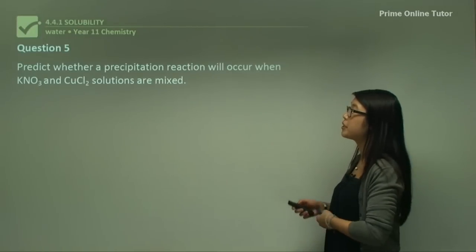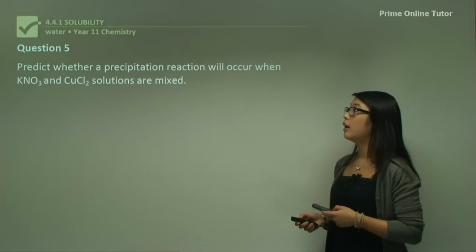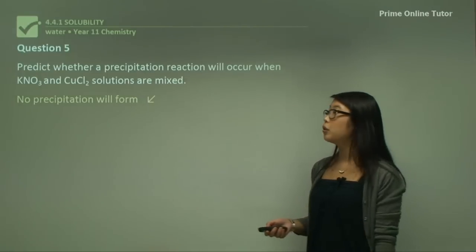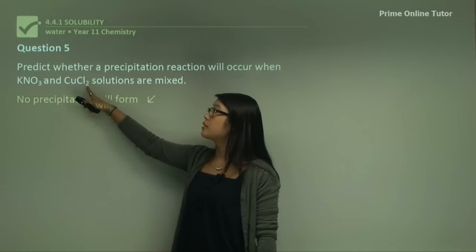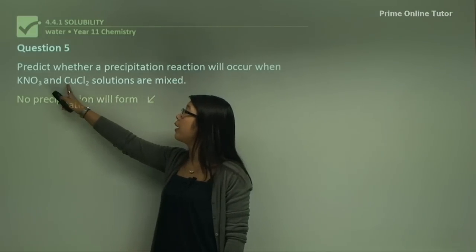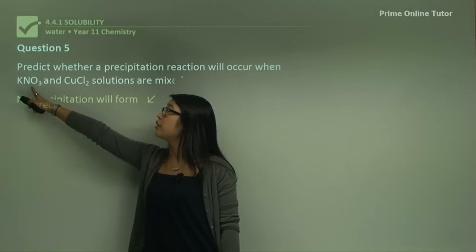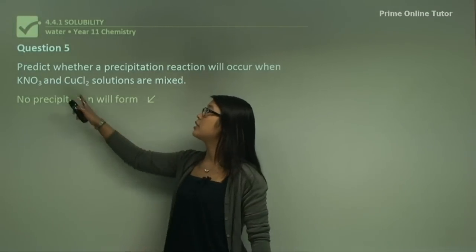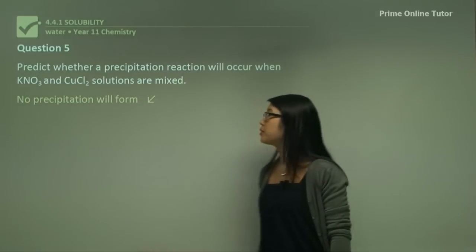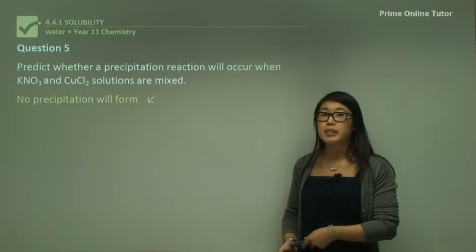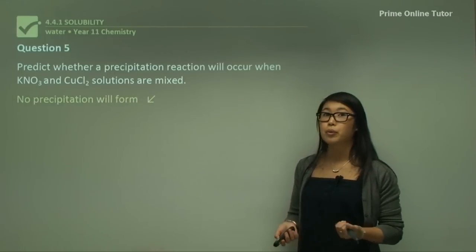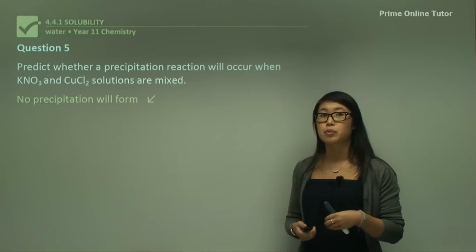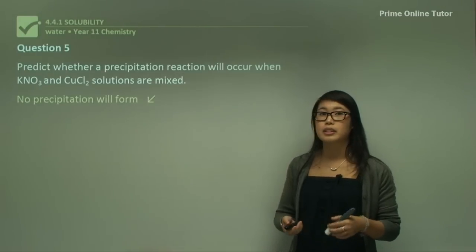Finally, question five: predict whether a precipitation reaction will occur when KNO₃ and CuCl₂ are mixed together. No precipitation is formed because NO₃⁻ is dissolvable in water, chloride ions are dissolvable in water, and when copper and NO₃⁻ bind together it won't precipitate — they stay separate as ions, similarly with the potassium and chloride. Remember, precipitation reactions occur when a chemical reaction between two ions produces a new product that is insoluble in water, forming a visible solid.